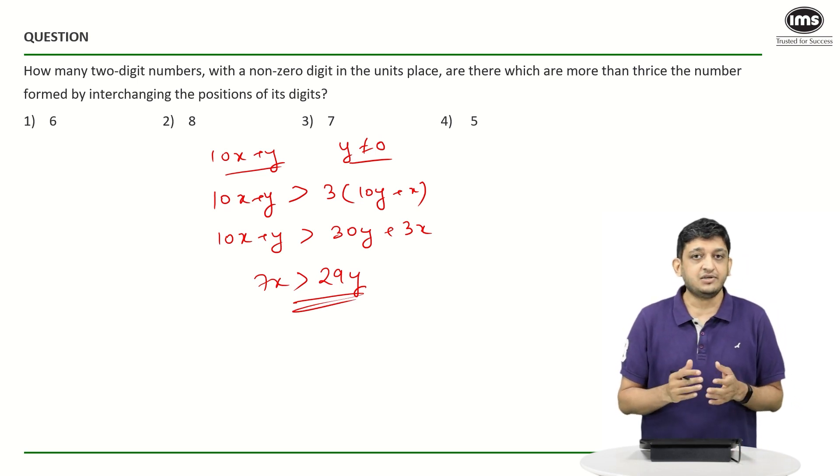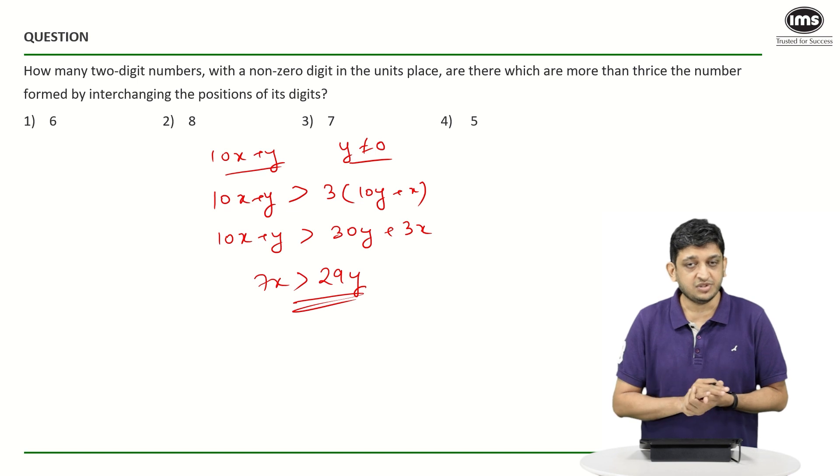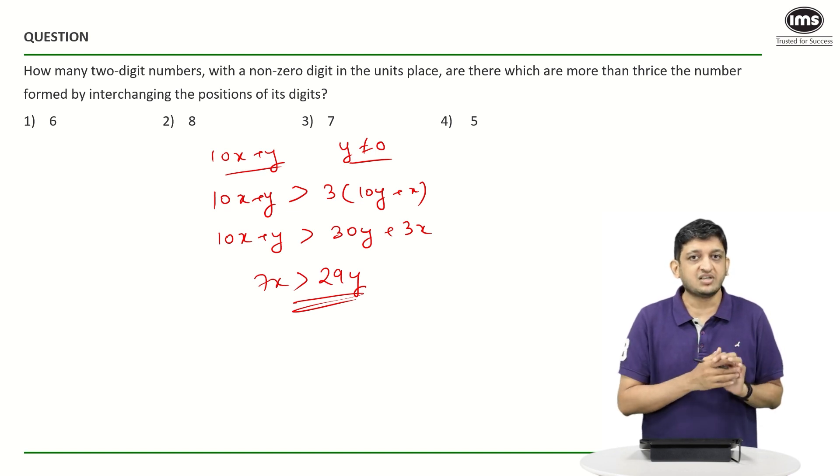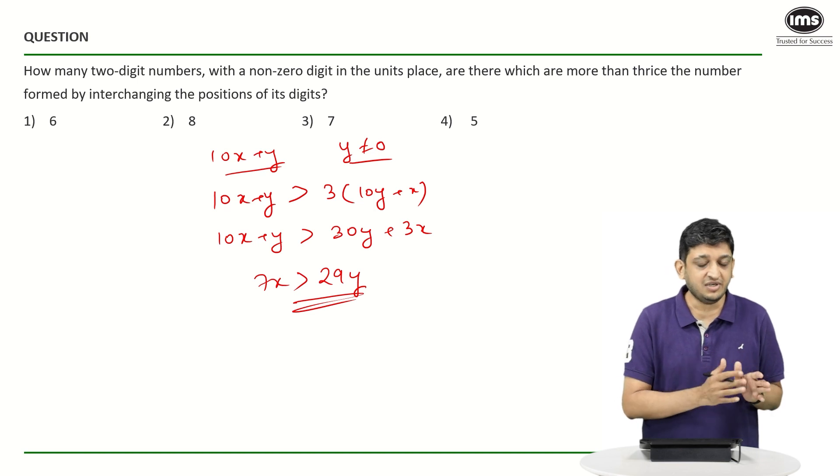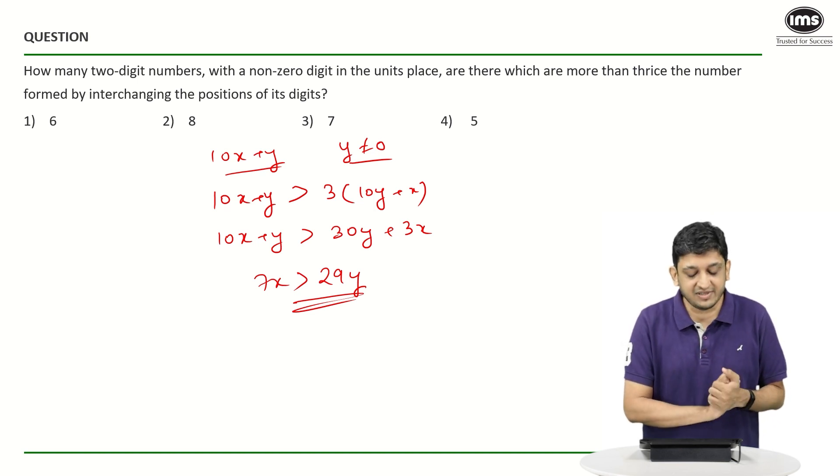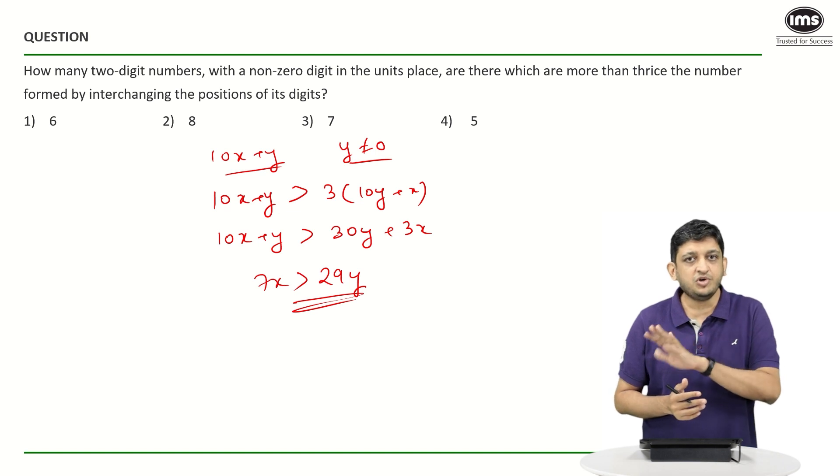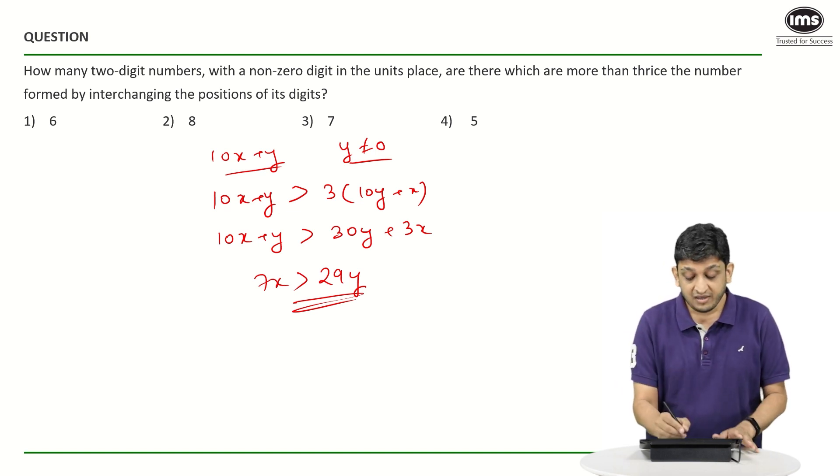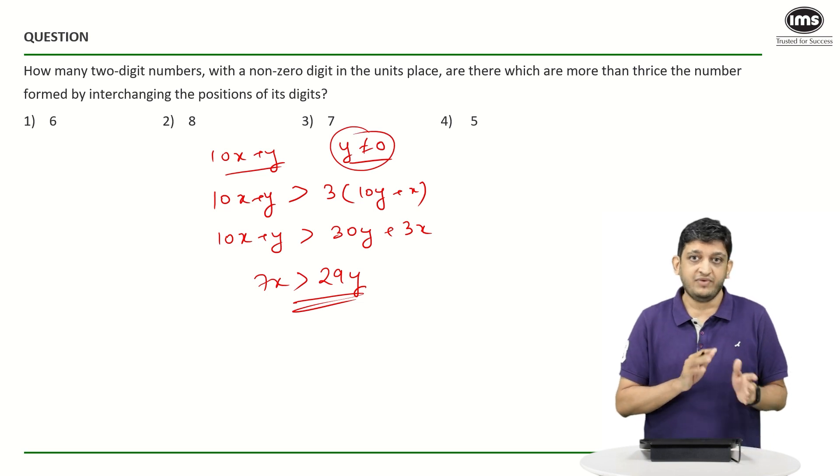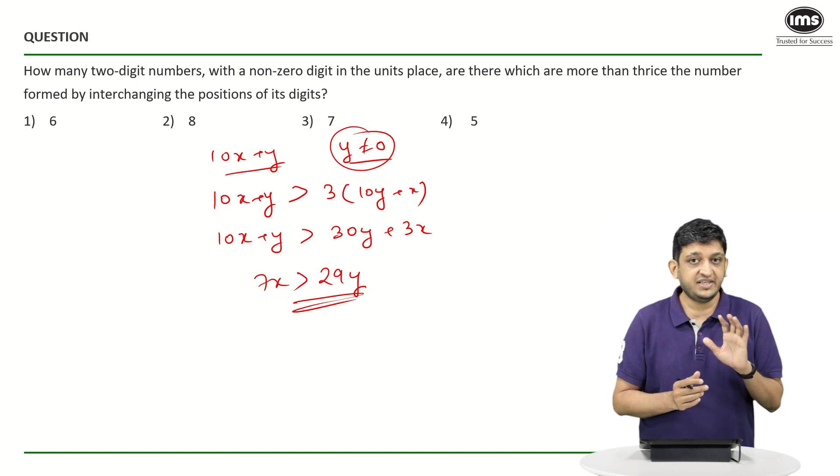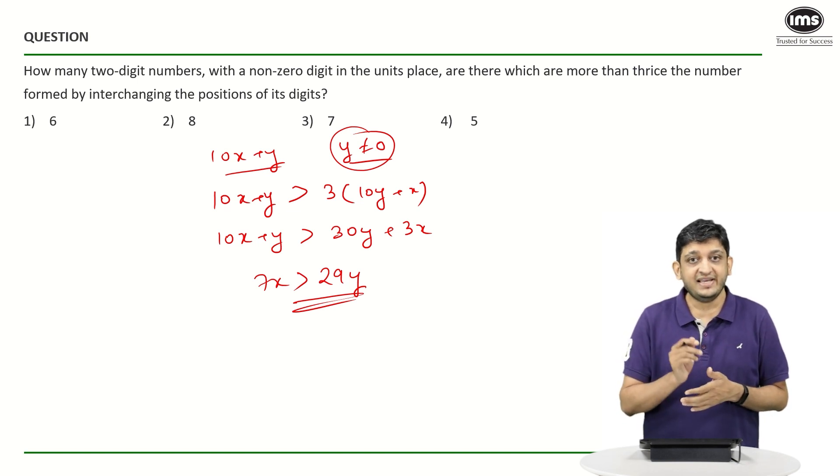After that, it is a matter of substituting different values of either X or Y and trying to figure out what all cases are possible. Obviously 7X being an easier value to calculate, we will start by putting values for X. If you put X equal to 1, 7 is not going to be greater than 29Y unless Y becomes 0, but Y is not expected to be 0, so Y cannot be 0. If you put X equal to 2, 3, or 4, you are again going to get a similar case. So the smallest value for X that gives you a chance of making it greater than 29Y, where Y is greater than 0, is going to be when X equals 5.